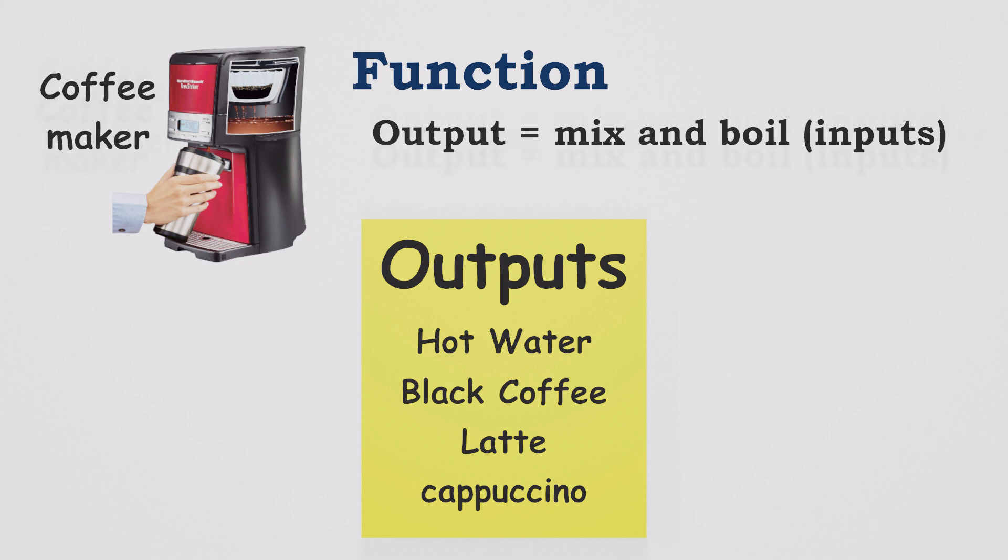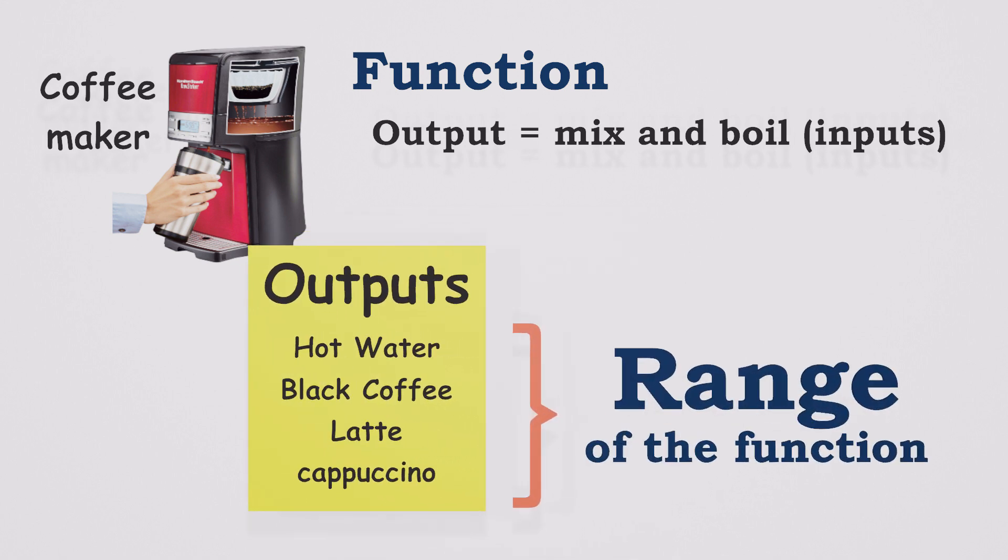Our coffee machine can brew hot water, black coffee, latte, or cappuccino. But attempting to make iced tea or orange juice would be a recipe for disaster. Therefore, we define the recommended outputs as the range of the function.